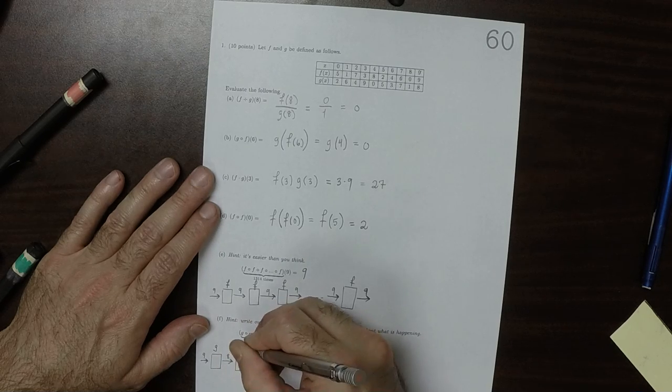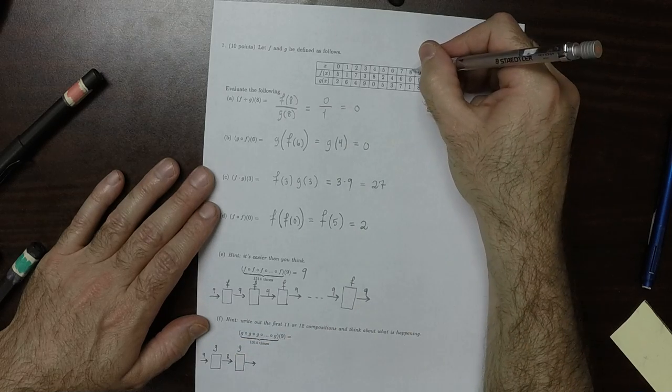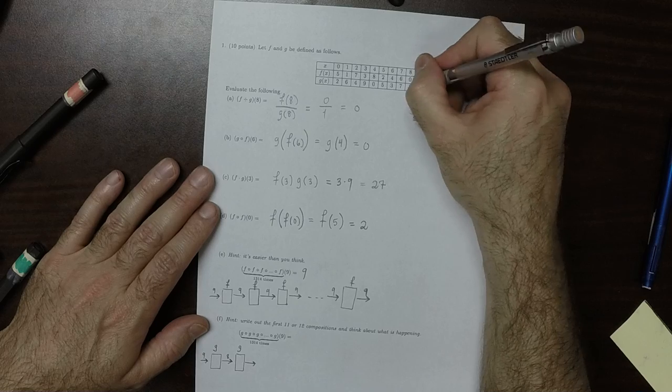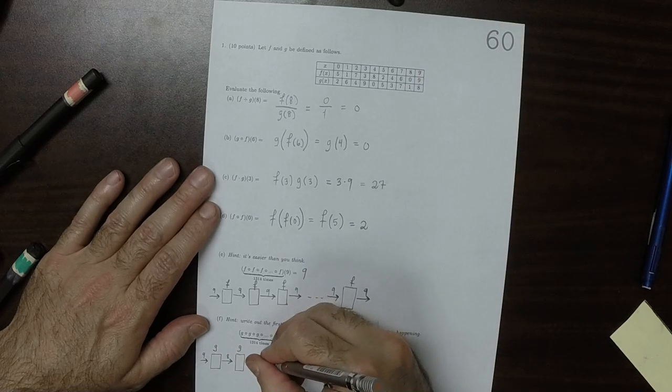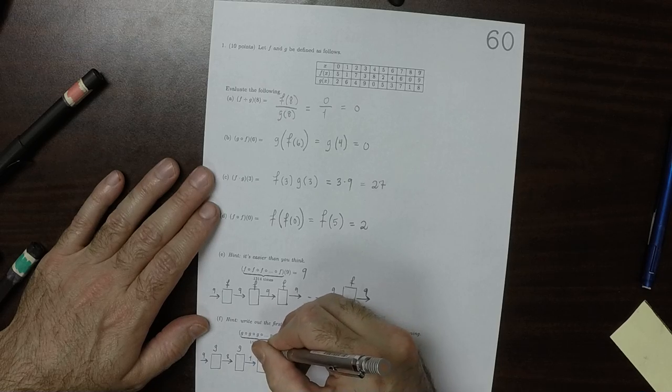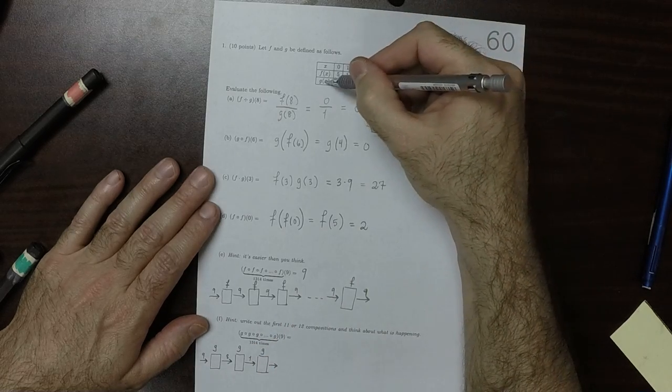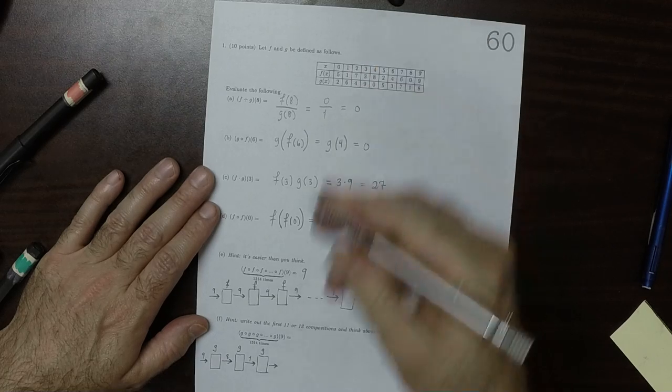So supposing that we route that into another g machine, well g of 8 is 1, so 1 would come out. And if we put that into another g machine, well g of 1 is 6.